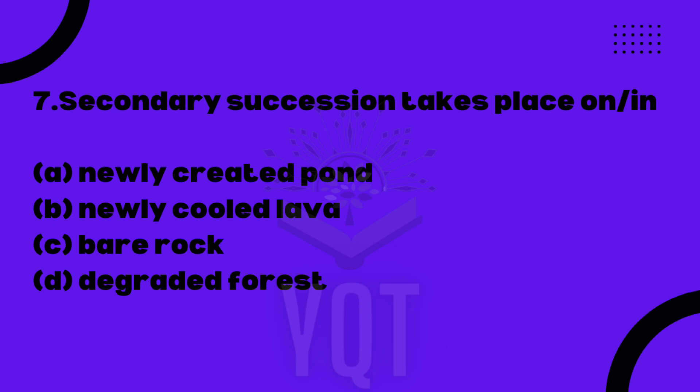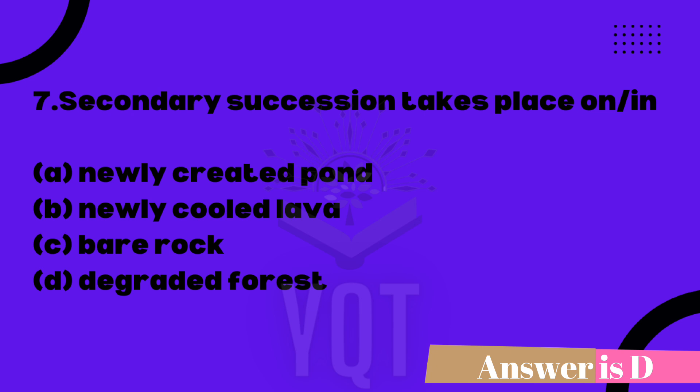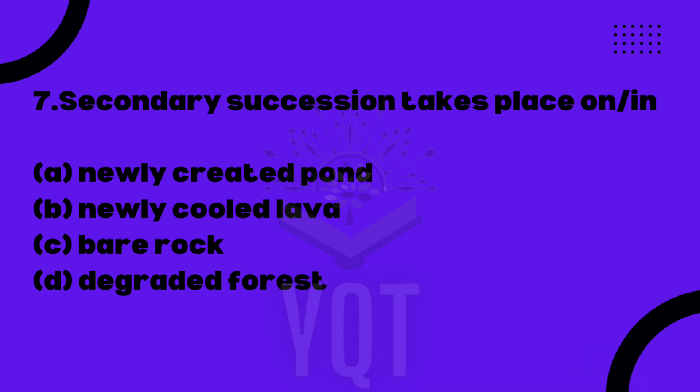Secondary succession takes place on or in? Option A: newly created pond. Option B: newly cooled lava. Option C: bare rock. Option D: degraded forest. Secondary succession occurs in a place where living organisms already existed. That place is disturbed and then organisms come back. Option D, degraded forest, is the correct answer.